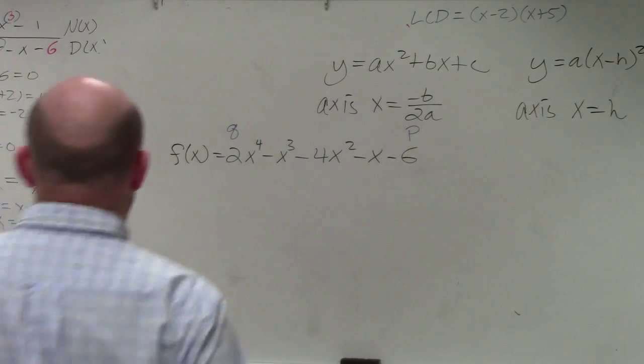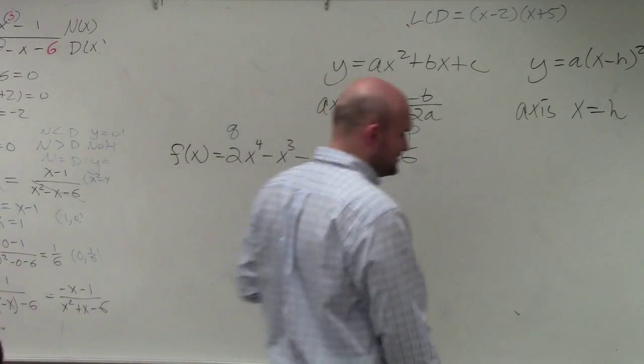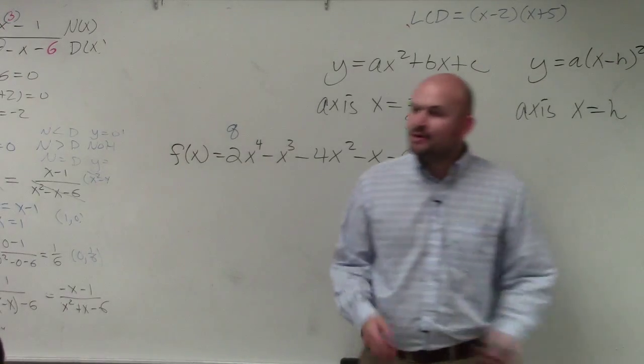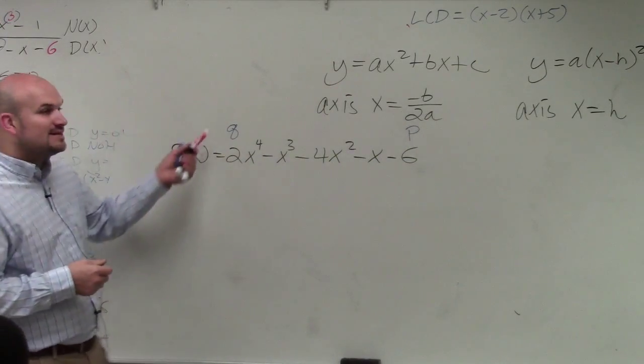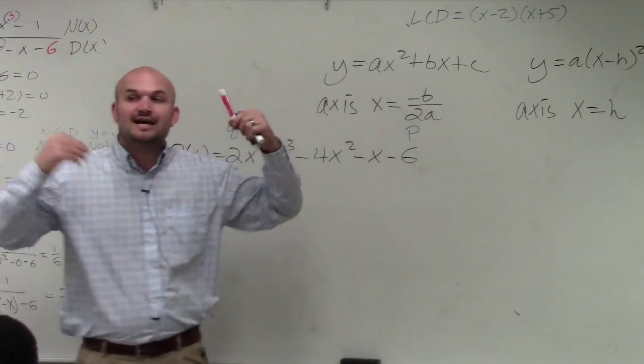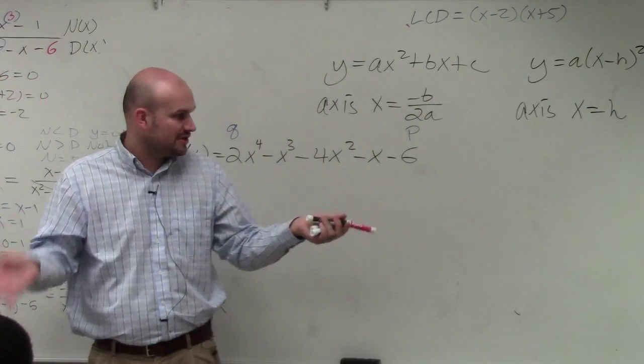So what Descartes, Rene Descartes, decided to do was rather than go out to the club on a Friday night, he took a look at this polynomial. And he said, when you do the p over q, that tells you what are all the possible rational zeros.